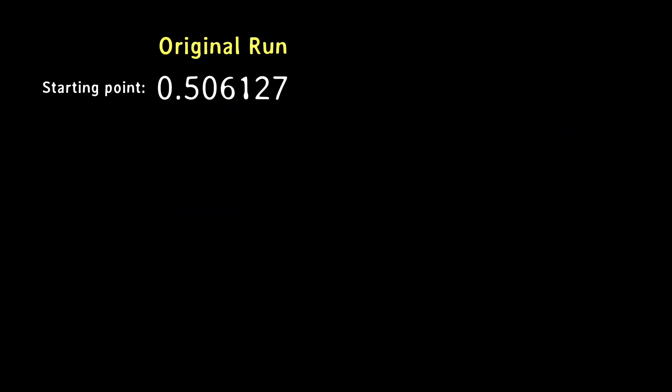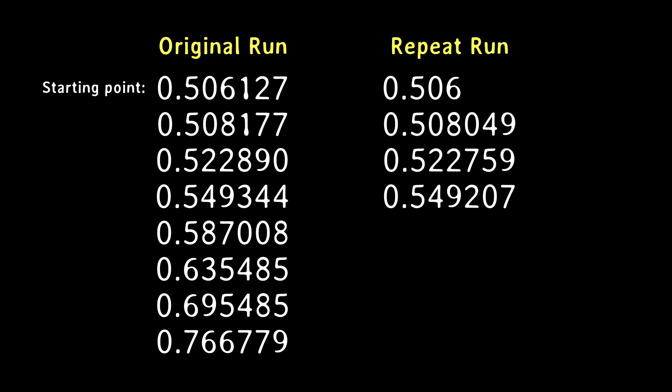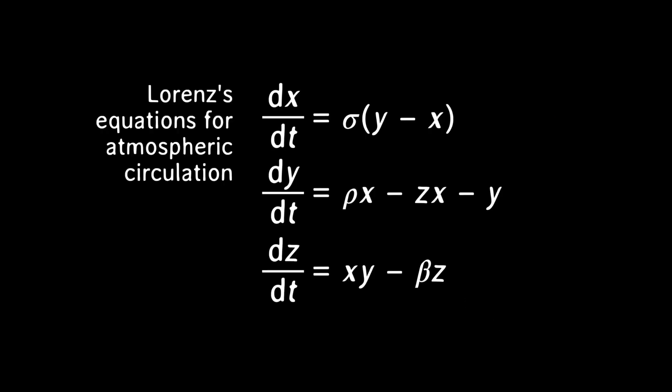He realized that while the computer calculated to six decimal places, he'd inadvertently truncated the initial conditions to three decimal places. His starting point for the second computer run was off by three hundredths of a percent. But how could that make such a difference? Well, even though the mathematics was simple, the equations were non-linear, mixing the variables in such a way that very small differences became amplified very quickly.